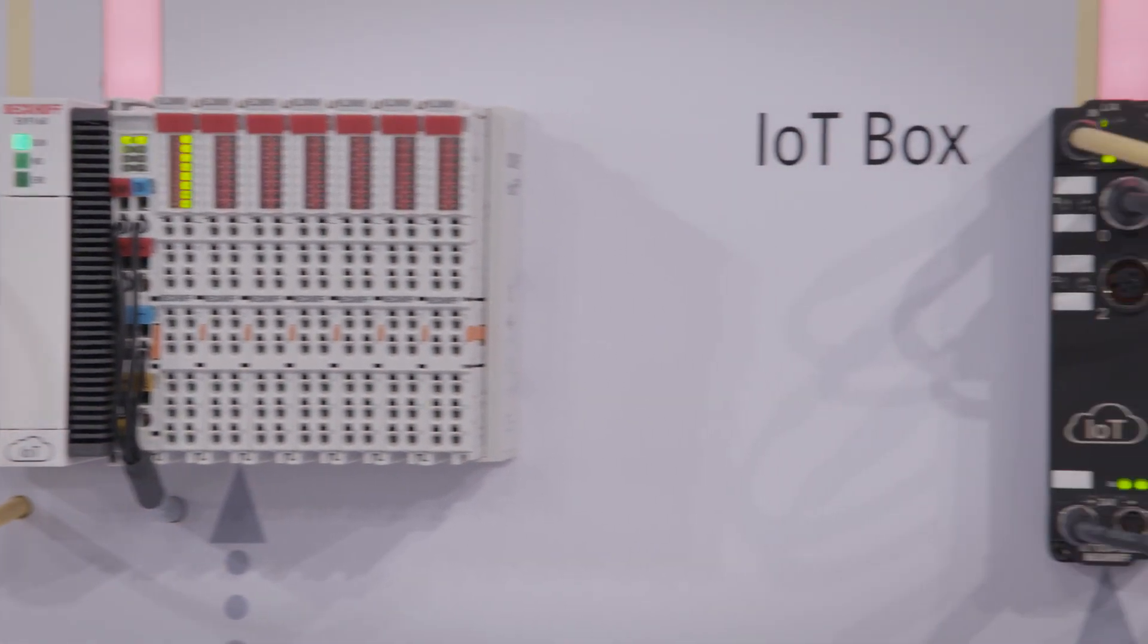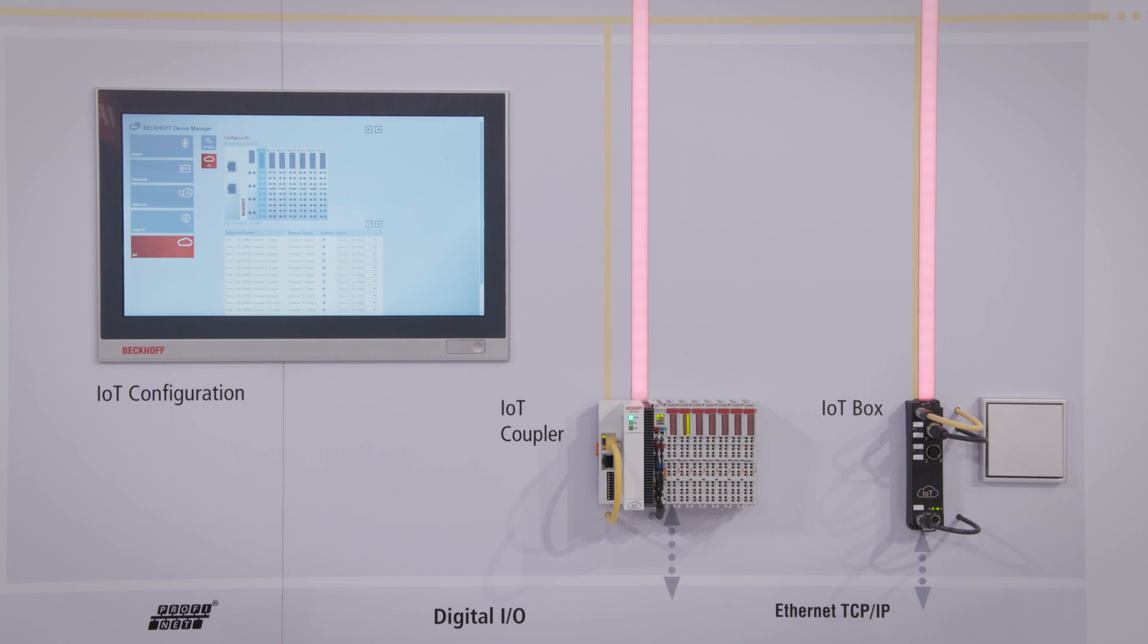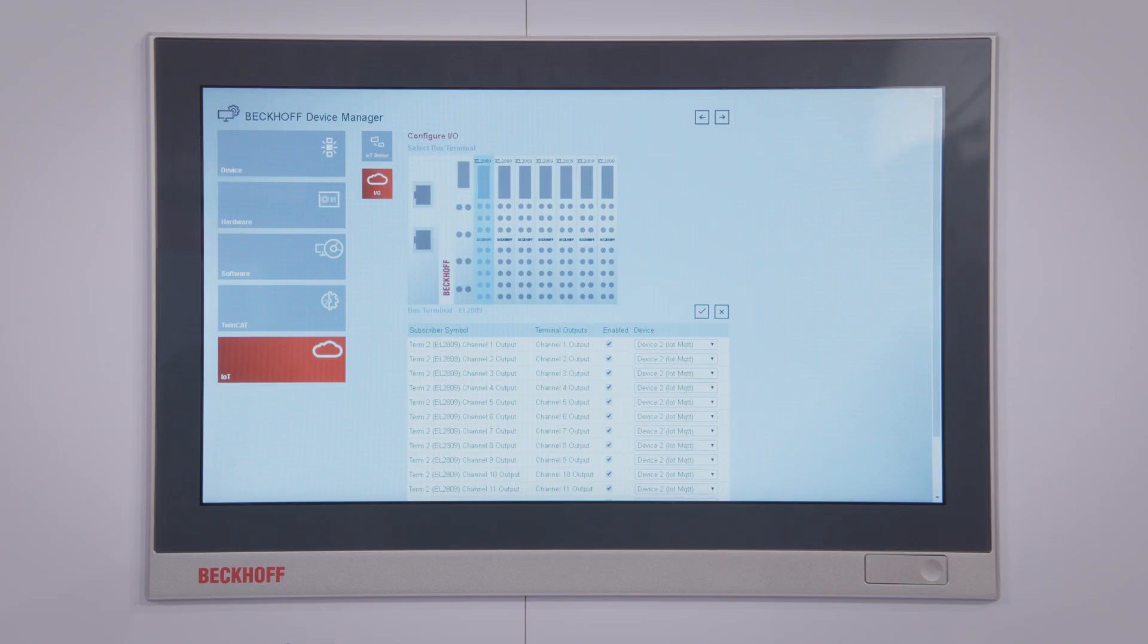With cloud-based control, the entire TwinCAT system, from engineering through to PLC, resides in the cloud. A special IoT field bus provides data communication connectivity.